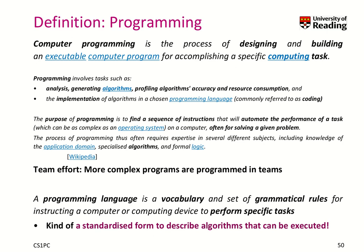What is a programming language? It's a vocabulary and grammatical rules that instruct a computer to perform specific tasks. That means it's a standardized form to describe an algorithm, but also this description can be executed. We can take our algorithm, describe it in a programming language, and execute it — which means it is automatized.